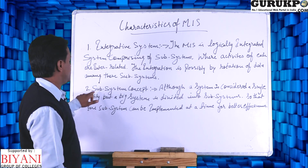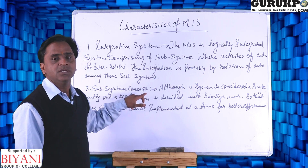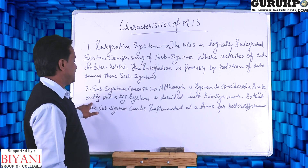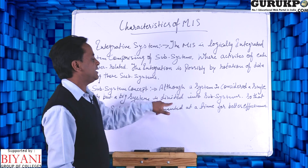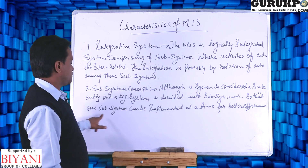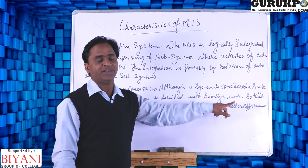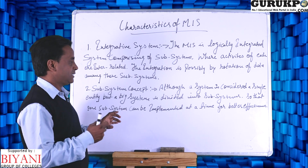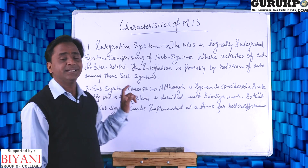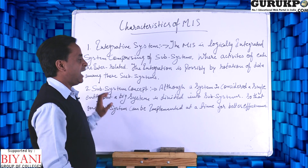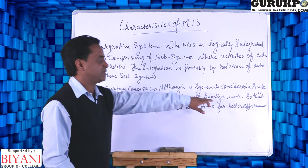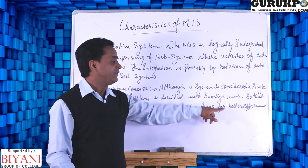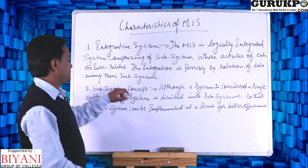The next characteristic is the subsystem concept. Although a system is considered a single entity, a big system is divided into subsystems so that one subsystem can be implemented at a time for better effectiveness. A single entity can be divided into different entities, and these are known as subsystems, allowing better results.